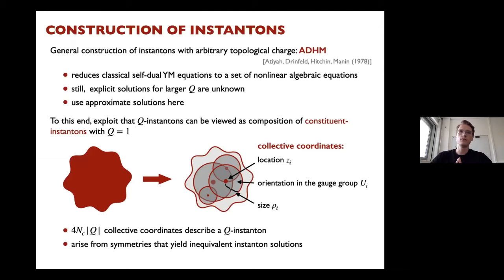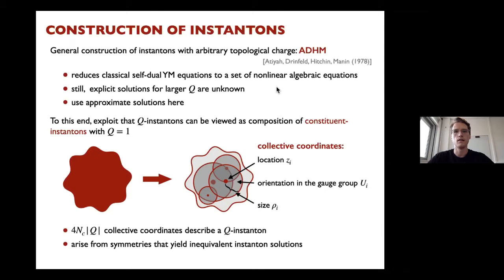There is a systematic construction to get general instanton solutions with arbitrary topological charge, known as the ADHM construction. It reduces the classical self-dual Yang-Mills equation to a set of non-linear algebraic equations. Even so, no known analytic solutions exist for larger topological charges.